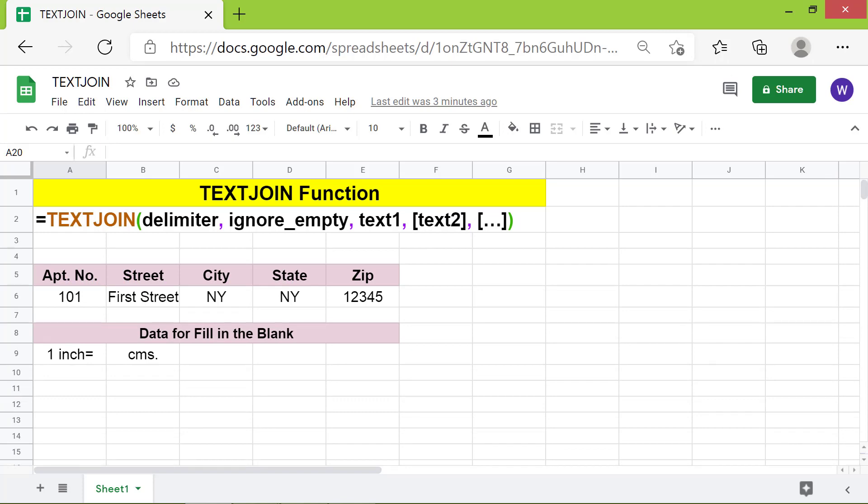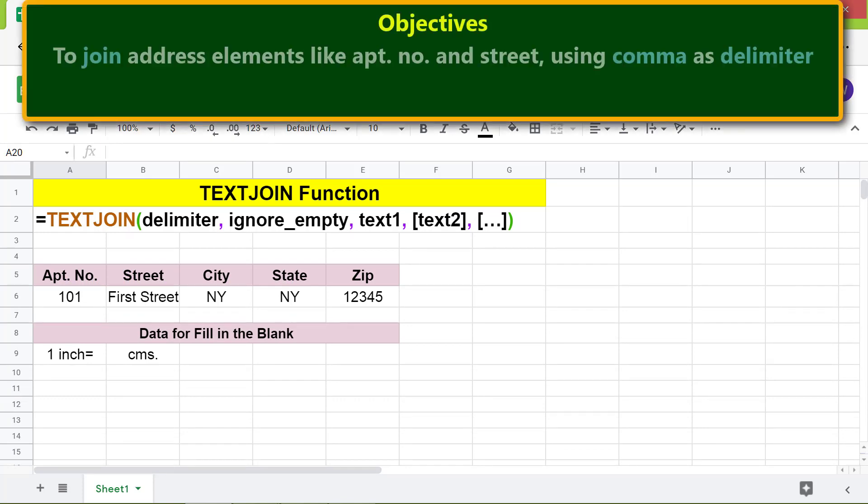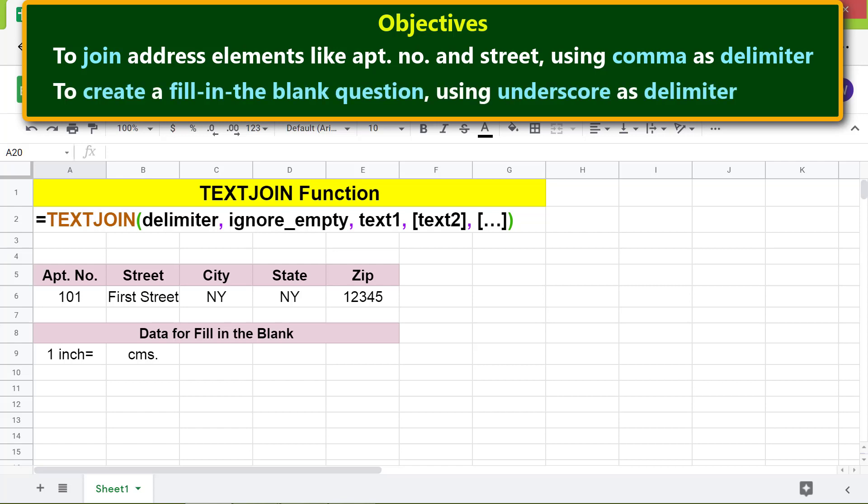Here are the objectives of using the TEXTJOIN function formula: to join address elements like apartment number and street using comma as delimiter, and to create a fill in the blank question using underscore as delimiter. Here's the data for the tasks at hand.